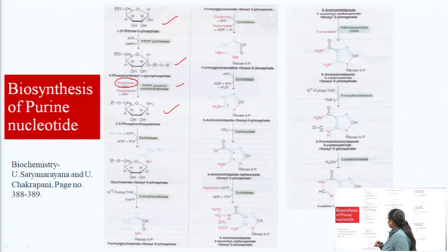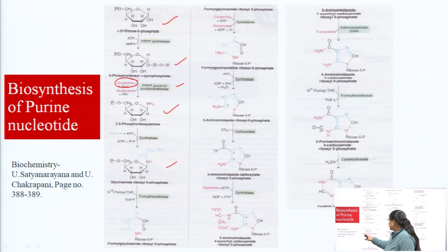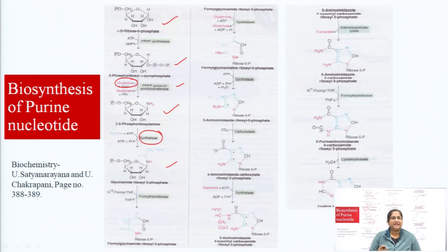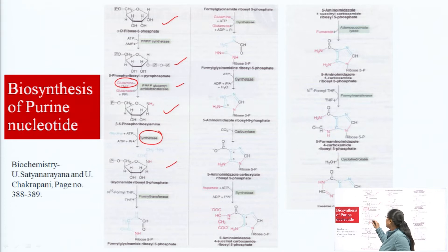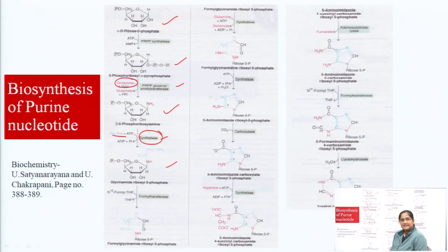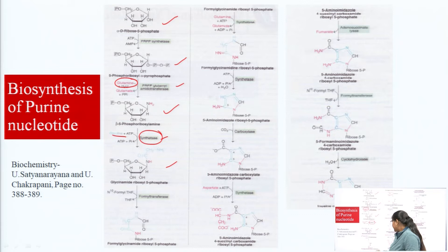With the help of glutamine, we have prepared beta-5-phosphoribosylamine, which is then converted into glycinamide ribosyl-5-phosphate with the enzyme synthetase. Here we are incorporating glycine, coming from beta-5-phosphoribosylamine with an incorporation of glycine plus an ATP molecule, giving us glycinamide ribosyl-5-phosphate.